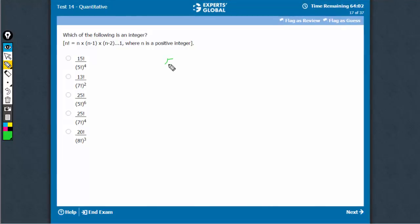15 factorial has only three 5s in it, in 5, 10 and 15. This is not going to be an integer. This has four 5s in the denominator.